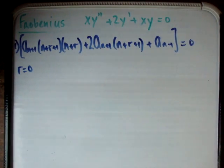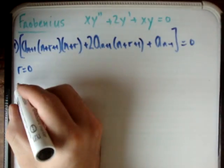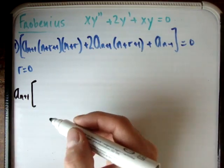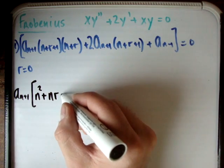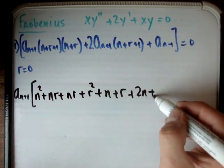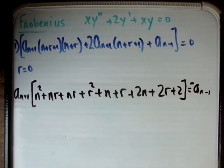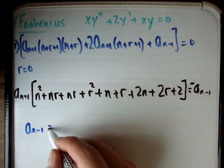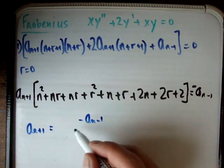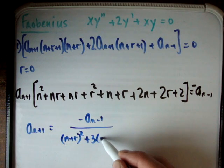So now we need to get our recurrence relation. How do we do that? Well, we just solved this by setting it equal to 0. And we're going to get the following. I'm going to factorize this straight out. I'm going to get an+1 outside of the following: n^2 + nr + nr + r^2 + n + r + 2n + 2r + 2 is equal to an-1. Well, negative an-1. Look, there's no point in me doing all this just for you. You can do that yourself. It's pretty straightforward algebra. And as a result of that, just doing a small bit of more manipulation and being quite careful, you're going to get that an-1 becomes, or an+1, excuse me, becomes negative an-1 over (n+r)^2 plus 3(n+r) plus 2.